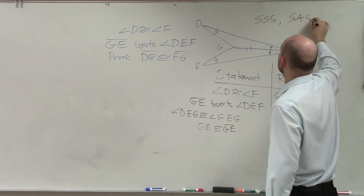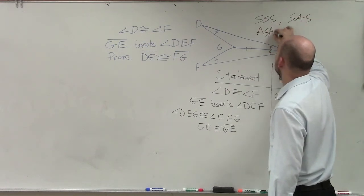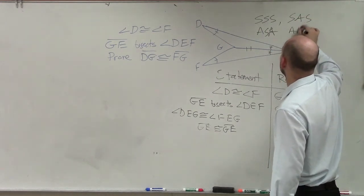Because there's only so many ways we can prove congruency. Side, side, side. Angle, side, angle. Angle, side, angle. And angle, angle, side.